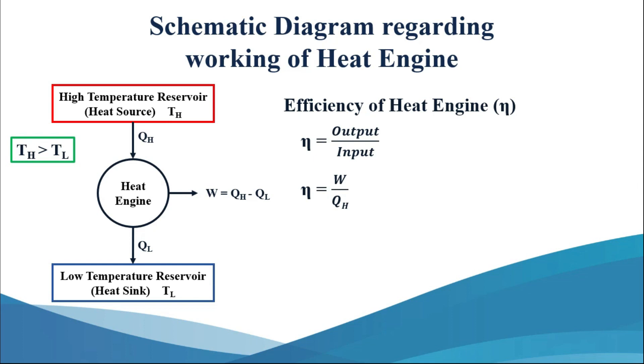Here we have output as W and input is QH, so eta equals to W divided by QH. We also have W equals to QH minus QL, so substituting this value of W we get eta equals to QH minus QL divided by QH. Separating the denominator we get eta equals to 1 minus QL divided by QH.